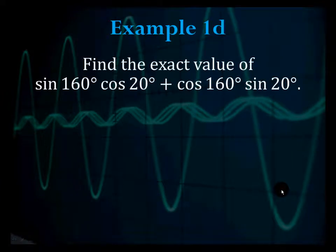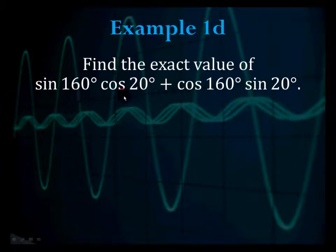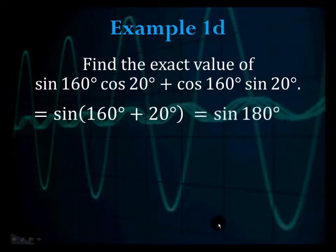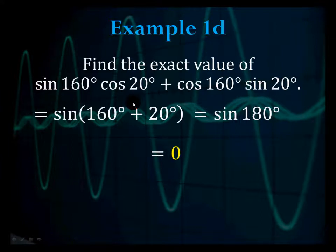Example 1d: find the exact value of sine 160 cosine 20 plus cosine 160 sine 20. Now you're going backwards — you need to identify which formula applies. The pattern sine a cosine b plus cosine a sine b matches the sine addition formula, so this equals sine of 160 plus 20, which is sine of 180, and that equals 0.